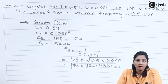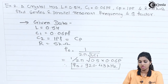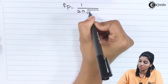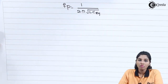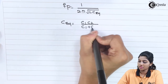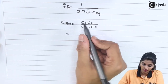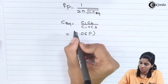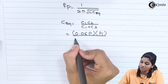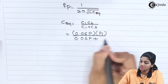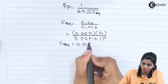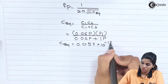Now, find out parallel resonant frequency Fp. The formula for Fp is 1 upon 2π times the square root of L·C_equivalent, where C_equivalent equals C1·C2 divided by C1 plus C2. This equals 0.06 pF into 1 pF divided by 0.06 pF plus 1 pF. We get C_equivalent as 0.057 × 10⁻¹² farad.